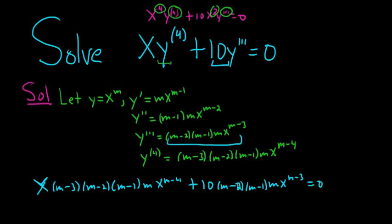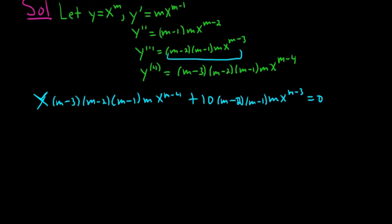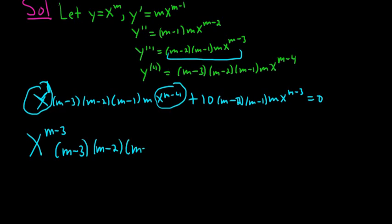Whenever you get to this step, you want to group together the x's. So here you have x to the 1, and here you have x to the m minus 4. So when you add those, you're going to get x to the m minus 3. Then we're left with m minus 3, m minus 2, m minus 1, and then m.